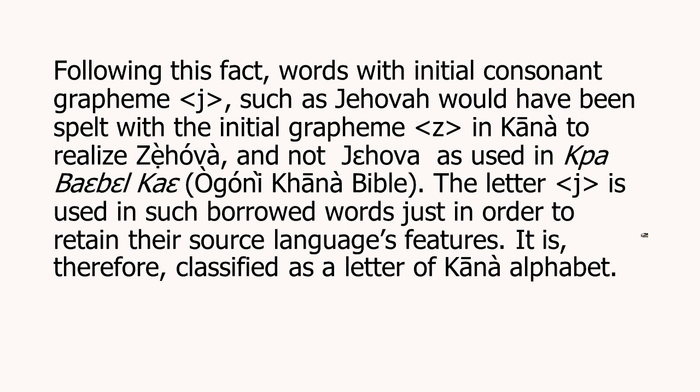Now let us look at the word Jehovah spelled with J in Kana. It is a borrowed letter, as I told you, found only in words borrowed into Kana — for example Jehovah, Jerusalem, and others. But if it were to be written according to the Kana alphabet, the J would have been Z, and it would have been spelled as Zehovah — that would have been the correct spelling in Kana. But because it is borrowed, it is allowed and accepted as a letter in the Kana alphabet.